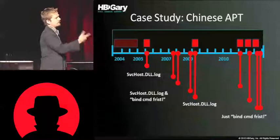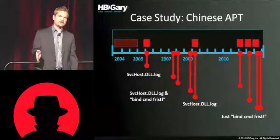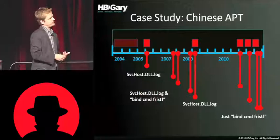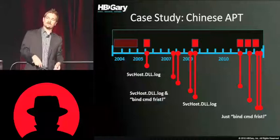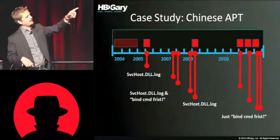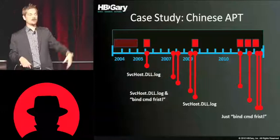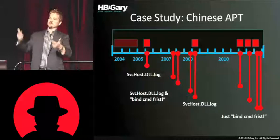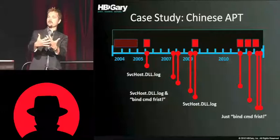Switching gears to a case study: we have a group of guys that have been attacking DOD systems for over five years. Back in 2005, responding to a U.S. Army-related incident, we had servicehost.dll.log as one of the strings inside malware. In 2007, we saw several more with an additional string: bind command first — but misspelled as frist. Late last year, another one had servicehost.dll.log. And just in March of this year, another had bind command frist but not the servicehost string. You start to see these connections over time — it's a single attack actor reusing a lot of the same material.